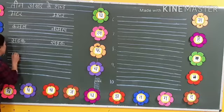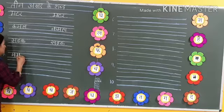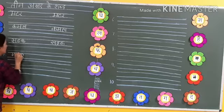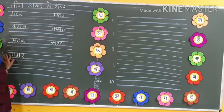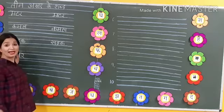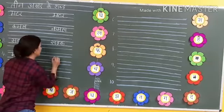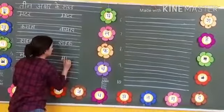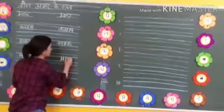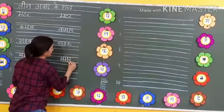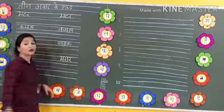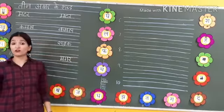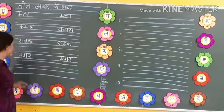Again in one line, and then write on number four. Ma-ga-ra. Magar. Make proper headline. Ma-ga-ra. Magar. Crocodile. What we call magar? Crocodile.